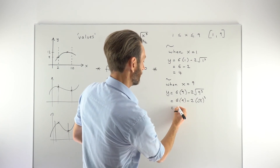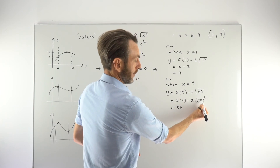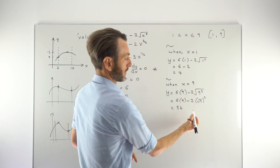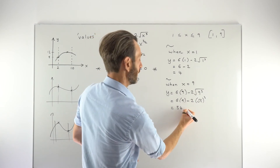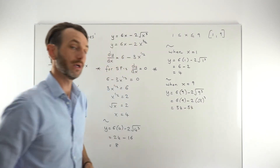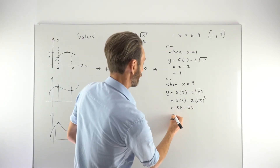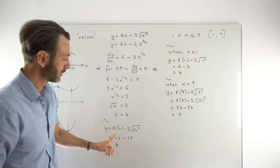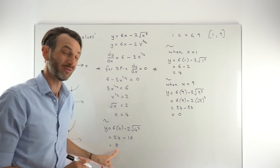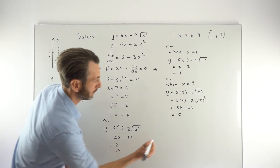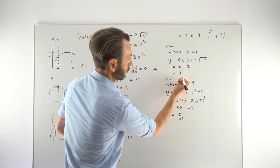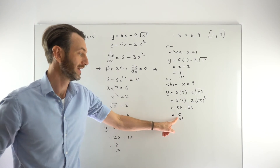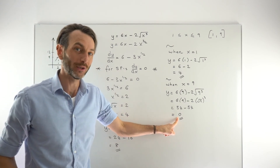Finding square root of 9 first then cubing is much easier: square root of 9 is 3, and 3 cubed is 27. So we have 6 times 9 equals 54, and 2 times 27 equals 54. Therefore 54 minus 54 equals 0. So when x equals 9, y equals 0. Now we've tested both endpoints and found our stationary point value. The three values to compare are 8, 4, and 0.